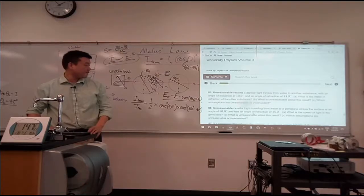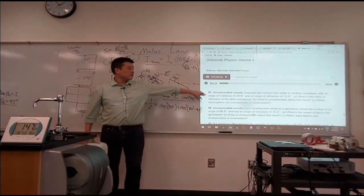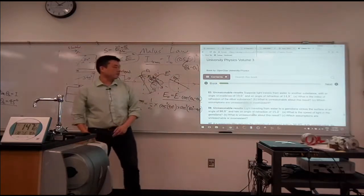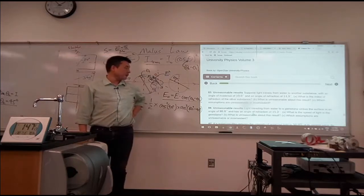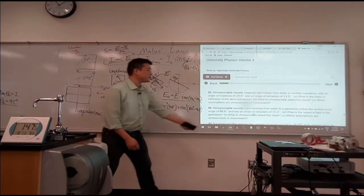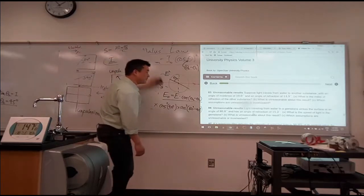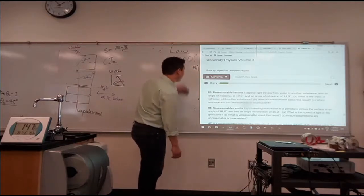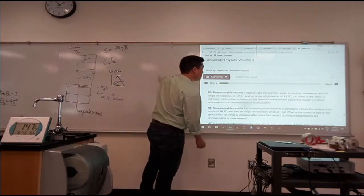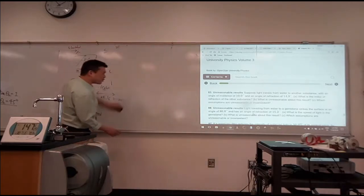Can everyone read this? Problem 85, unreasonable results? Yes? Suppose light travels from water to another substance with an angle of incidence of 10 degrees and an angle of refraction of 14.9 degrees. It asks what is the index of refraction of the other substance, and part B, that's the reason I want you to go over this.